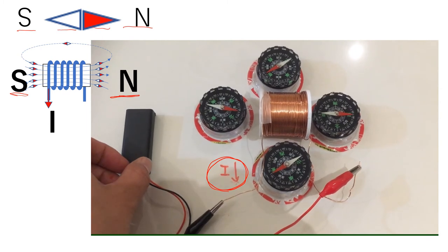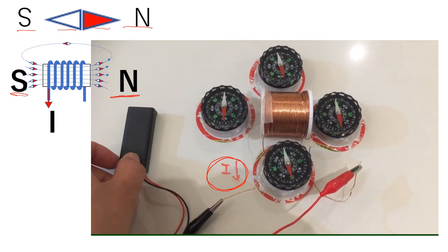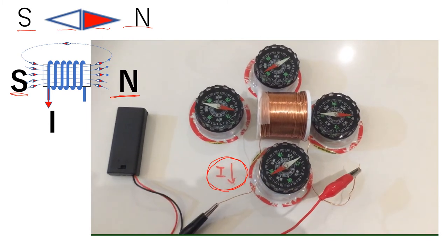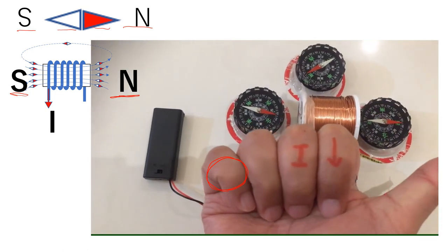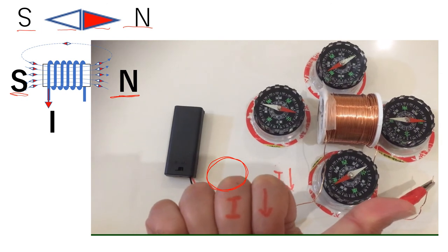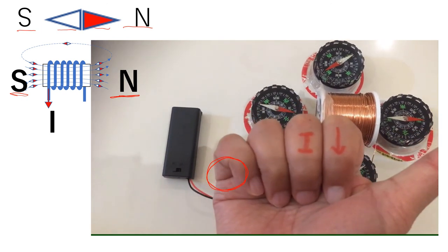The magnetic field follows the induced direction. Please remember the right-hand rule, the current direction, and the induced magnetic field.